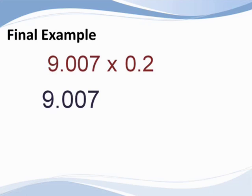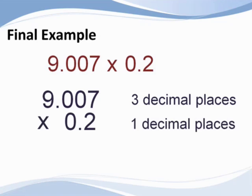The first number has three decimal places. The second number has one number to the right of the decimal point. Therefore, we need to put the decimal point so that there are how many places to the right of that point?